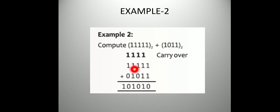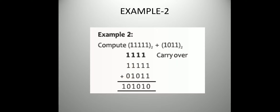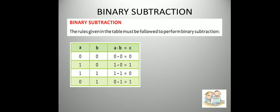Now 1 and 1 gives 10, and 10 plus 1 gives 11. Then 1 and 1 here: 1 plus 1 is 10, so 10 is written here. We have followed the table and the rules given.